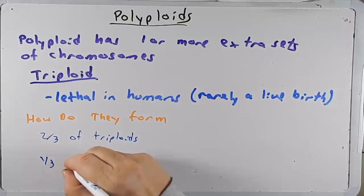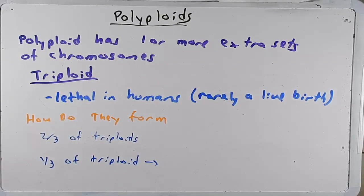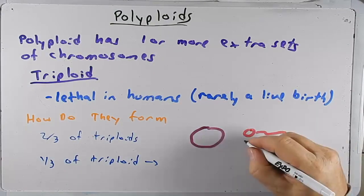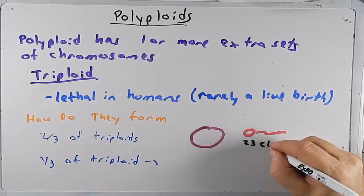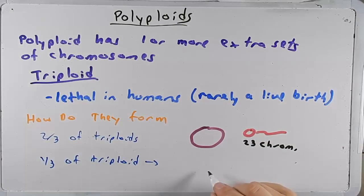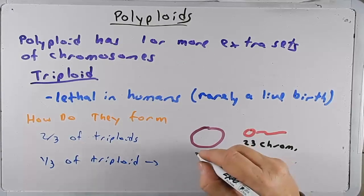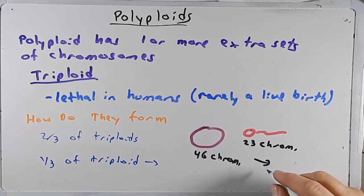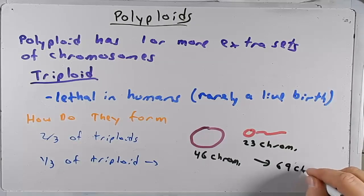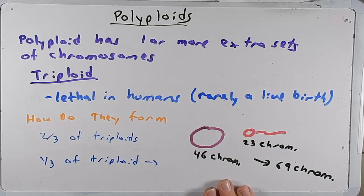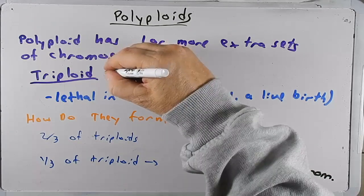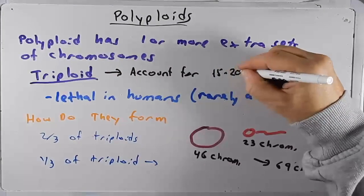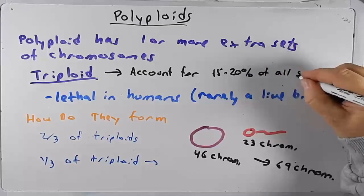The other third of triploids form when you have an egg and a sperm where one has the normal 23 chromosomes and the other had an error during meiosis — chromosomes didn't separate — so they have 46. This also results in a zygote with 69 chromosomes. Triploids account for about 15 to 20 percent of all spontaneous abortions, which is a pretty high number.